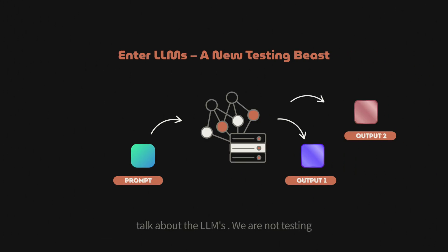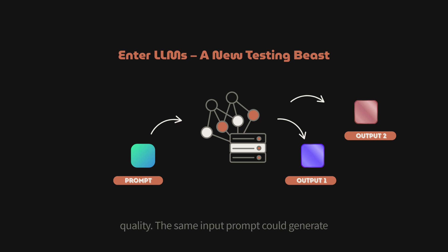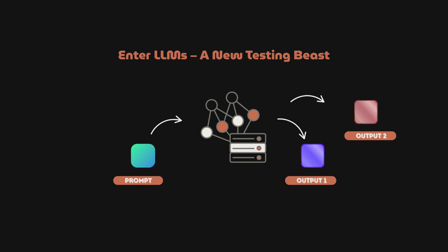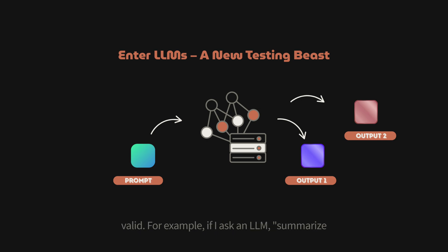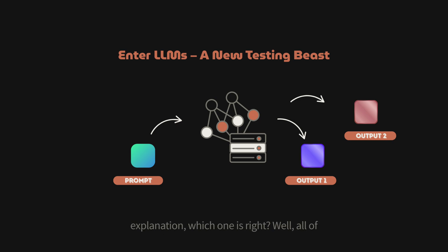With LLMs, we are not testing correctness in a binary sense — we are testing quality. The same input prompt could generate slightly different outputs each time, and in the worst case all of them could still be valid. For example, if I ask an LLM to summarize the Agile Manifesto, it could return three sentences, five bullet points, or a story-like explanation. Which one is right? Well, all of them potentially could be right.